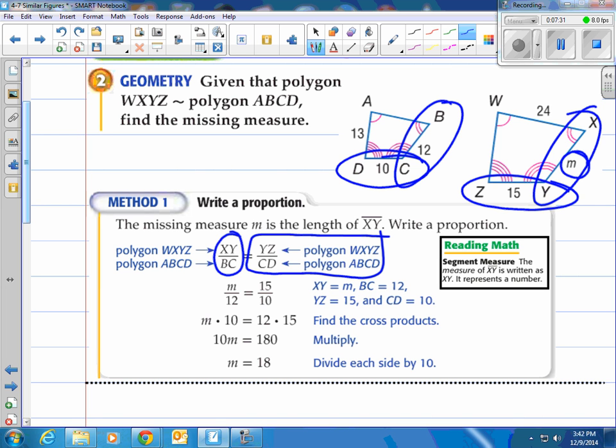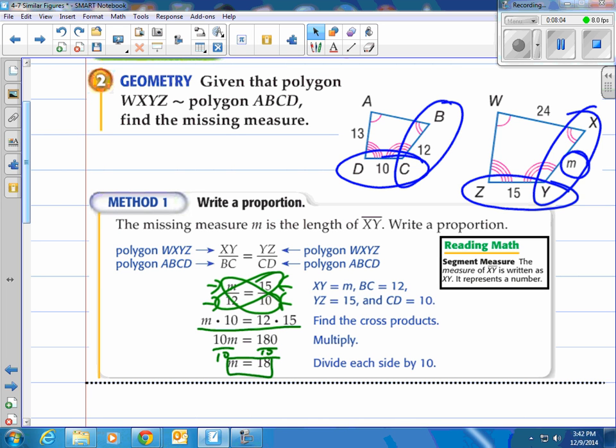So once we put these together, you put the numbers in. Here's the missing piece. Here's the 12, the 15, and the 10. So we're going to cross multiply. 12 times 15 is 180. Let's divide by this 10 on both sides and the answer will be 18. So M is 18.